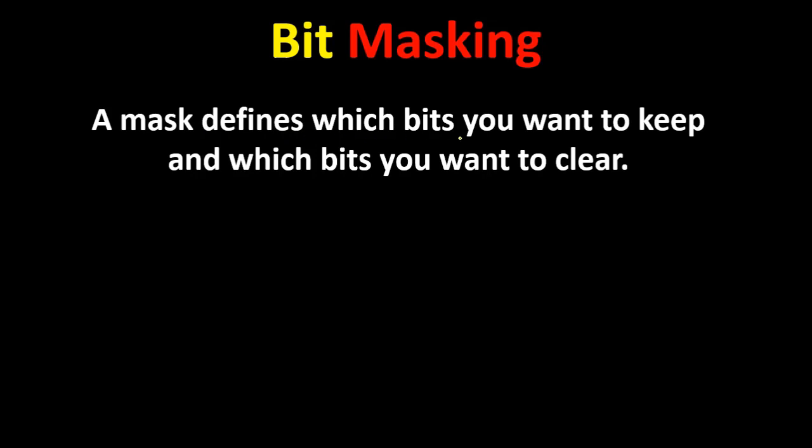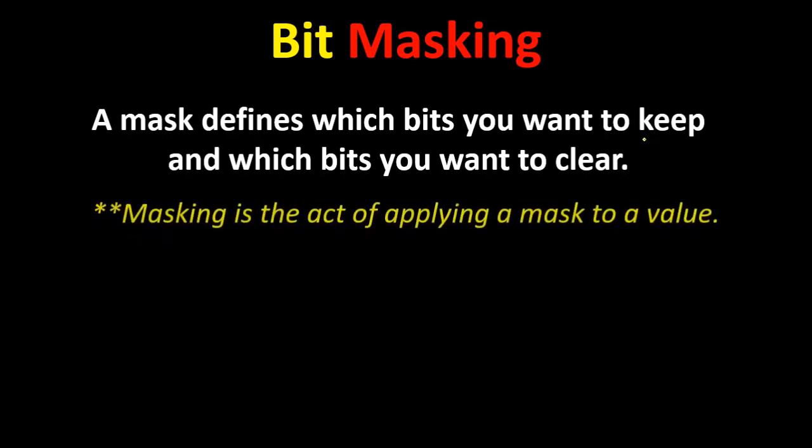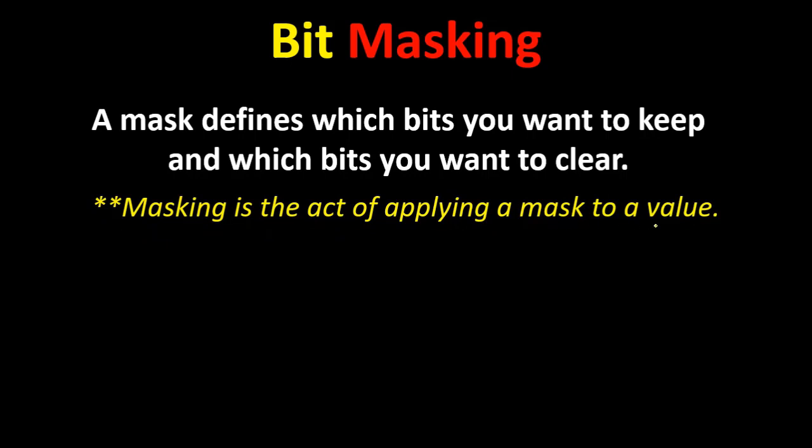In this video, we're going to talk about bit masking. I found a lot of students confused about bit masking. I see a lot of people who started learning C programming are confused about masks. What is a mask? If you watch this video till the end, you'll understand everything about bit masking. A mask defines which bits you want to keep and which bits you want to clear. Simply, a mask is a value and that value we will apply to another value using a bitwise operator to do something. Masking is the act of applying a mask to a value.